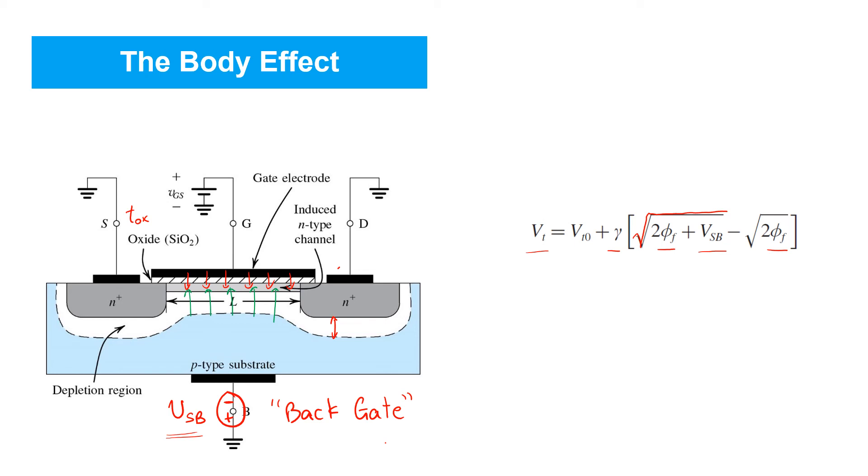This so-called body effect's impact on the drain current can be neglected if the source is shorted to the body. In such cases, VSB is 0. And substituting that into the expression above, we see that the threshold voltage is simply equal to VT0. So, VT0 can be thought of as the nominal threshold voltage for the MOSFET in the absence of any body effect.